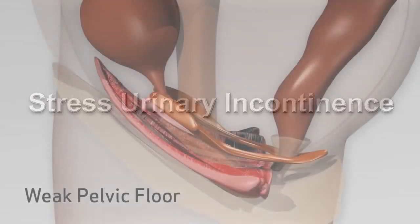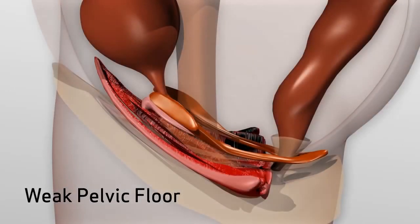Stress urinary incontinence occurs when the muscles and tissues that help support the bladder become weak.